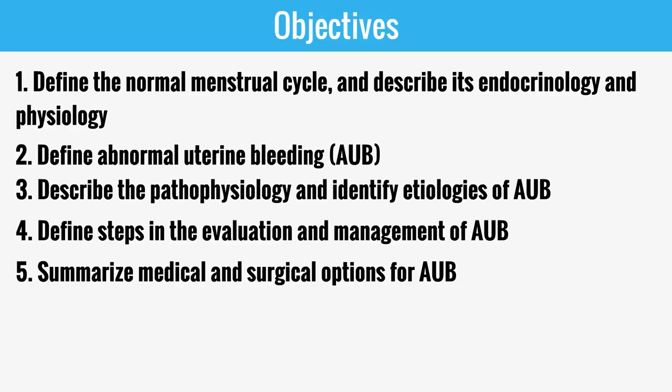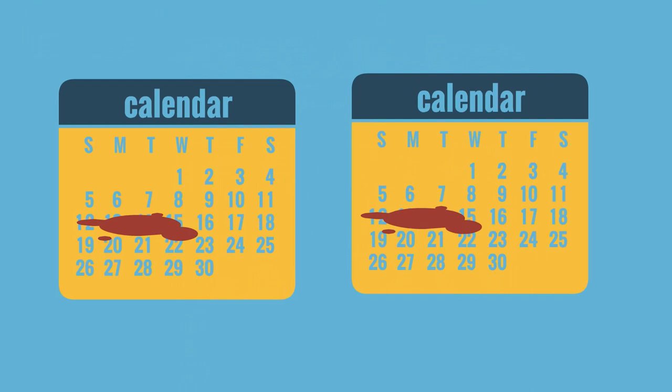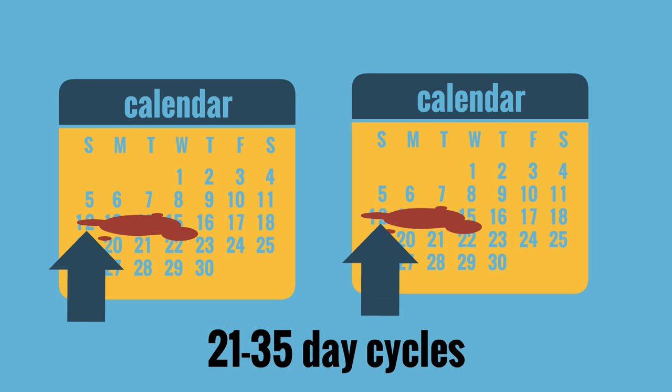Let's talk about the normal menstrual cycle. It is predictable and precisely regulated. The cycle lasts 21 to 35 days — this is the time between the first day of one menses to the first day of the next menses. The duration of menstrual flow is 4 to 6 days with a loss of approximately 30 cc's of menstrual blood.